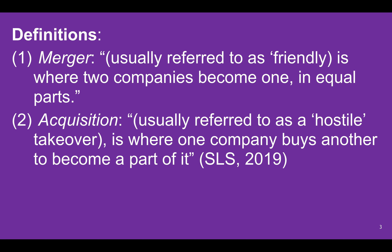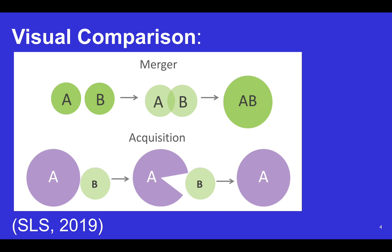Here's a more specific definition of both terms. A merger is usually referred to as 'friendly' — it's where two companies become one in equal parts, a combination of two equals. An acquisition is usually referred to as a hostile takeover, where one company buys another to become a part of it, typically a larger company taking over a smaller one.